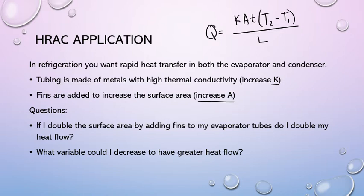Looking at that formula, if I double the surface area by adding fins to my evaporator tubes, do I double my heat flow? Sure. If you do a multiplier of two up here, your heat transfer is going to be double. Your heat flow will be doubled. What variable could you decrease in order to have greater heat flow? Anything on the top you want to increase. So you want more time for it to flow. You want a bigger area for it to flow through. You want a better thermal conductor. You want a bigger heat differential. The only thing that you could decrease to have greater heat flow is if you made the thickness of the material thinner. If you have a nice little thin object that you're sending heat through, it's going to transfer more in a given amount of time if L is smaller.